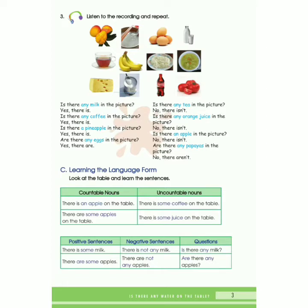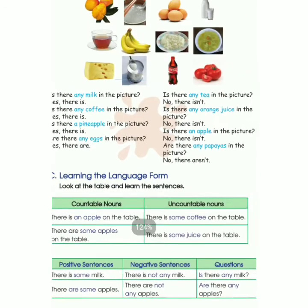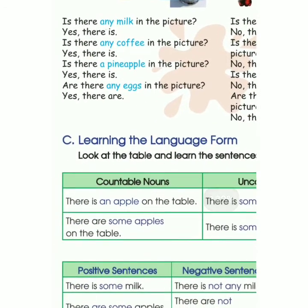Untuk yang no-nya: Is there any tea in the picture? No, there isn't. Is there any orange juice in the picture? No, there isn't. Now, look at Part C. Nah, kita mulai dari yang countable noun.